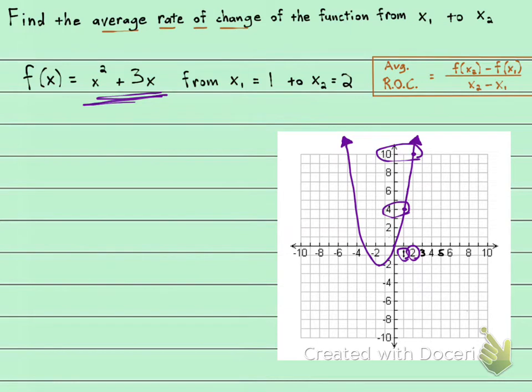And this formula, average rate of change, is really just asking you for the f of x₂, which is the y value, which is the 10, minus the f of x₁, which is the y value, which is the 4.